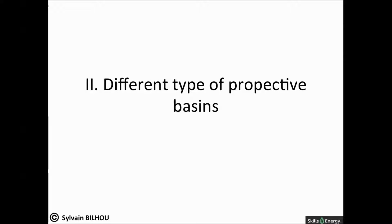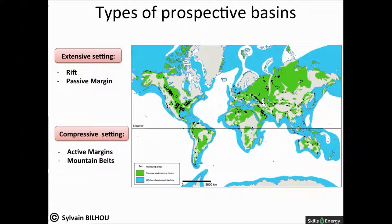I will now describe the different types of prospective basins. As shown on the map, prospective areas are large and present a wide variety of basins. They have been classified according to their tectonic settings.